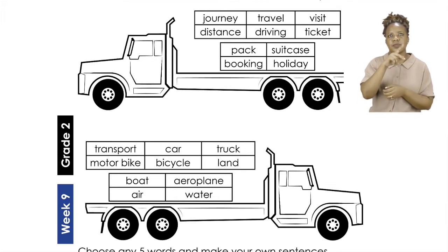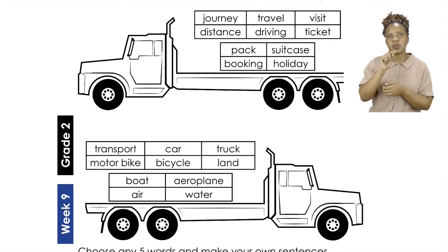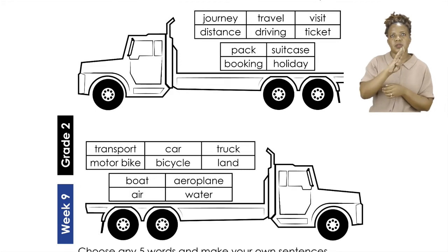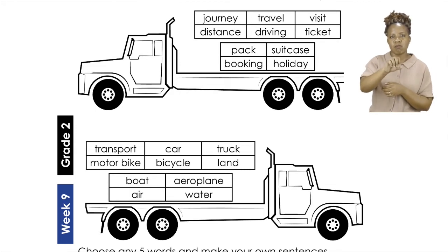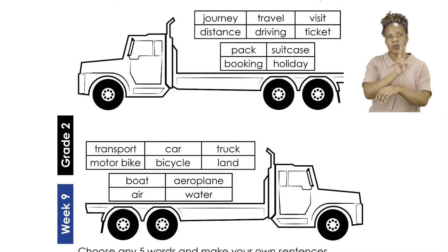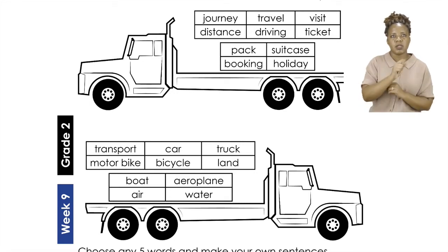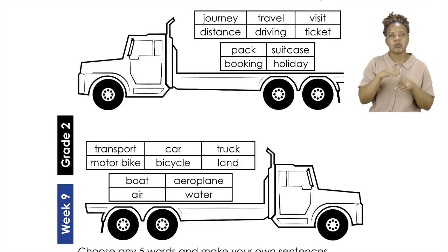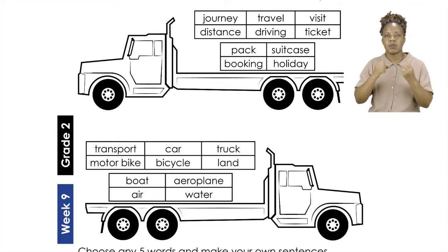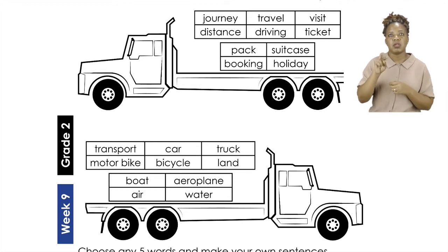Well done, everyone. Now let us read the words below on the second track. We have the words: transport, car, truck, motorbike, bicycle, land, boat, aeroplane.